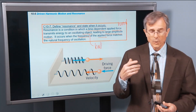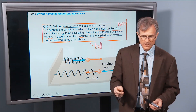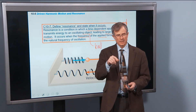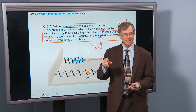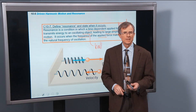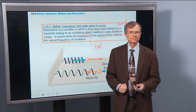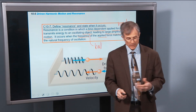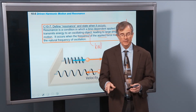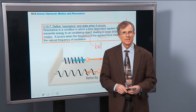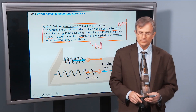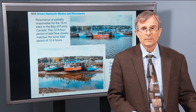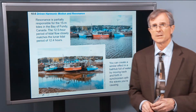We now know what the natural frequency of oscillation is for a mass-spring system — it's an angular frequency of square root of k over m. And the angular frequency for a pendulum is square root of g over l. So when those match up, then you get a large resonance.